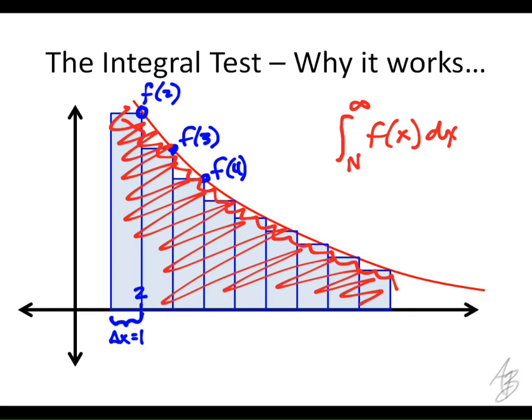So if this integral here is finite, and the sum is actually an under-approximation, and this is why it has to be decreasing. If it's decreasing, then we know the sum is an under-approximation. So if this integral is finite, and the sum is less than that, then we know that the sum of all these rectangles is also finite, so it's also going to converge.